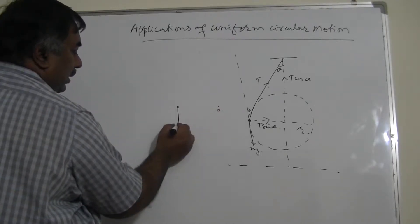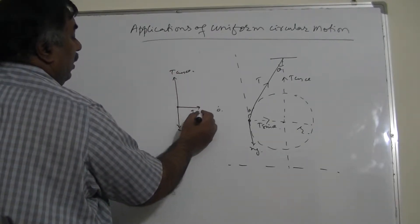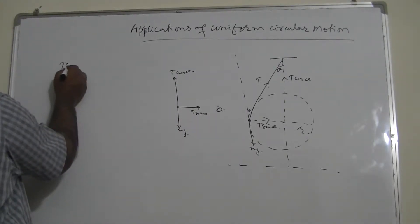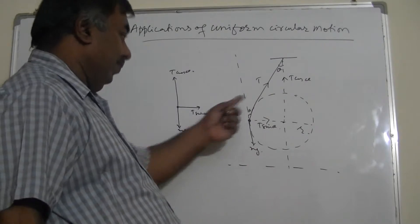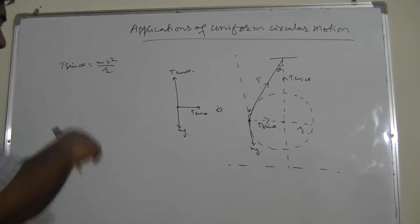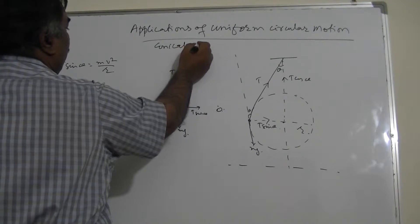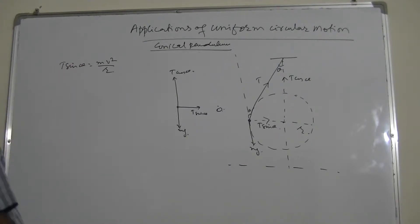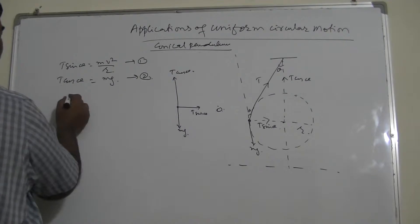Simplifying: here is the center, this is the mass mg downward, T cos theta upward, and T sin theta horizontal toward the center. The force responsible for providing the centripetal force is T sin theta. So T sin theta equals mv² upon r, where m is the mass of the bob, v is the speed, and r is the radius of the circle. Since it makes a cone shape, it is called a conical pendulum. T cos theta equals mg — this is equation 1 and equation 2.